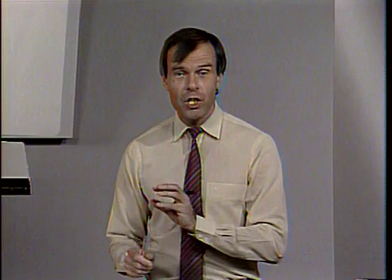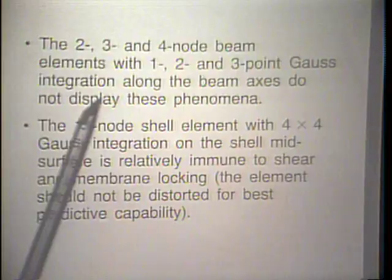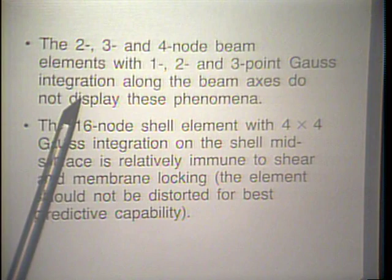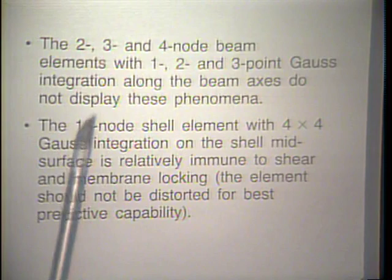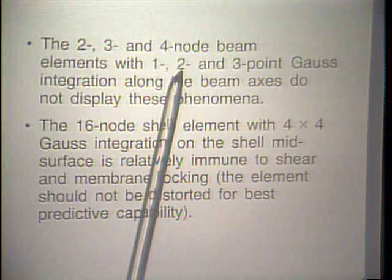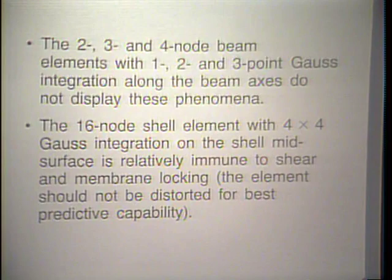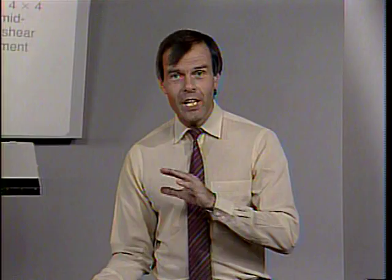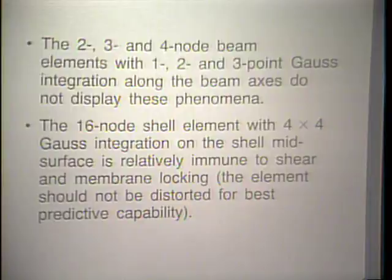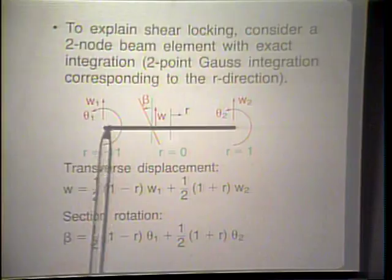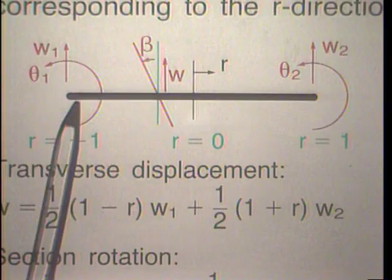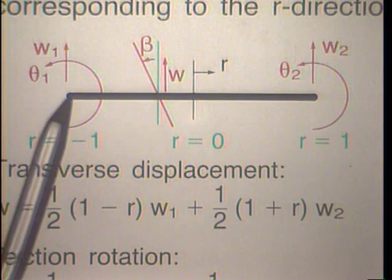The two-, three- and four-node beam elements with one-, two- and three-point Gauss integration along the beam axis do not display shear and membrane locking phenomena. The 16-node element with four-by-four Gauss integration is also relatively immune to shear and membrane locking. Let us study what this shear locking phenomenon is by looking at a two-noded beam in two-dimensional action, with deformations described by W1 and theta 1 at one node, and W2 and theta 2 at the other.